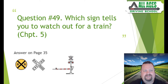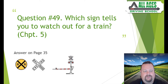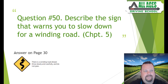Question number forty-nine: which sign tells you to watch out for a train? Chapter five, page 35. The three most common railroad warnings: first, a circular railroad sign indicating you're approaching a railroad; second, the sign that tells you you're within 100 feet of the railroad; and third, the X railroad crossing sign at the actual crossing. Most crossings in cities have a crossing arm with flashing red lights. Remember: when stopped at a railroad crossing, you cannot be any closer than 15 feet from the track.